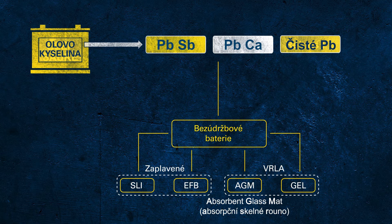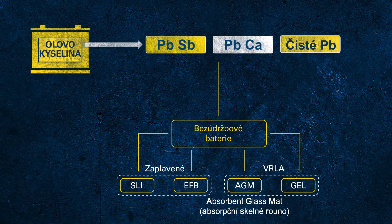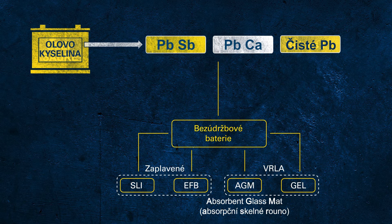AGM stands for absorbent glass mat, which indicates the main technological difference to a flooded battery. In this kind of battery, the electrolyte is no longer free but fixed, absorbed in a glass mat separator. Each cell of an AGM battery is sealed from the environment to ensure proper function, and every cell is equipped with a separate valve to release potential unwanted overpressure to avoid permanent damage. This construction and function principle provides higher performance and reliability than a flooded battery ever could.